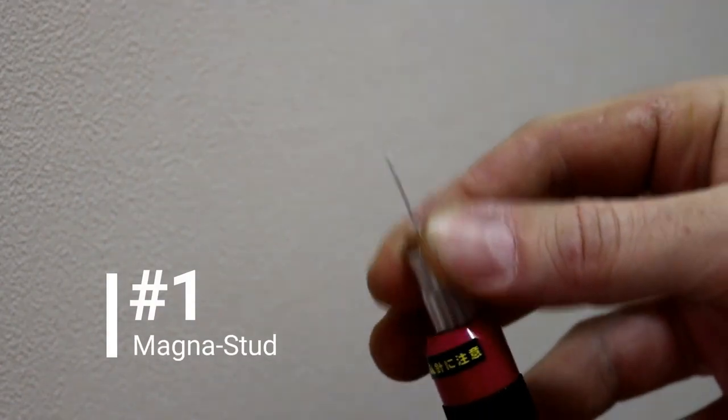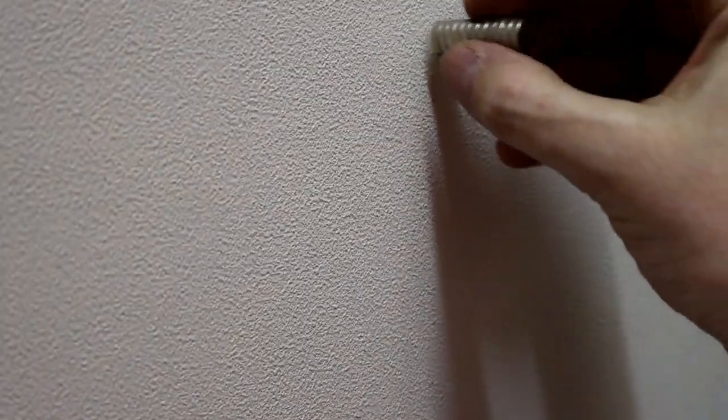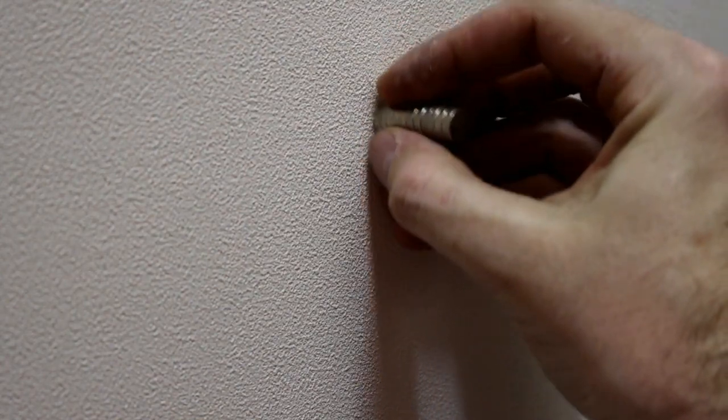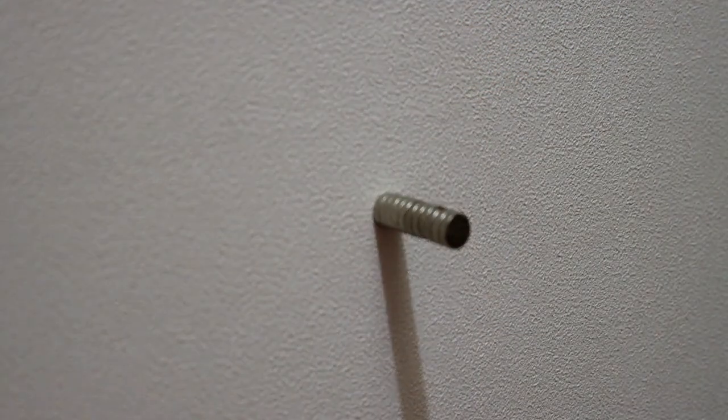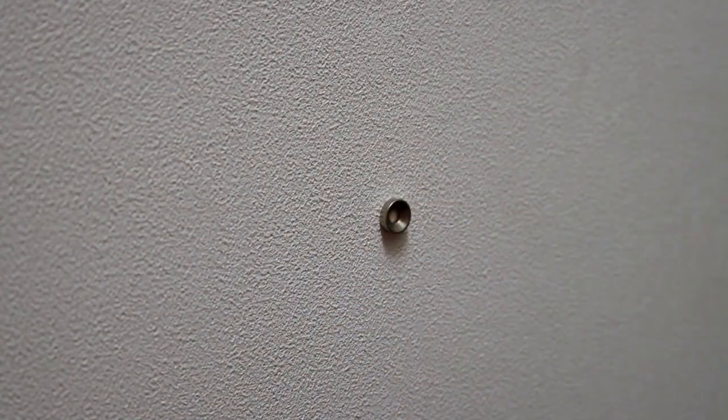If you don't have a stud finder or you don't want to put holes in your walls, get yourself some really strong rare earth magnets and search for the drywall screws that were used to attach the drywall to the studs. Then line up your magnets and what you'll find is you have a nice line that indicates where the stud is behind the wall. Easy peasy.